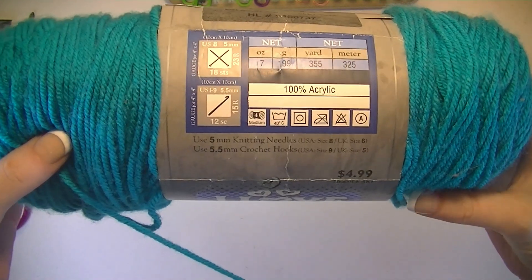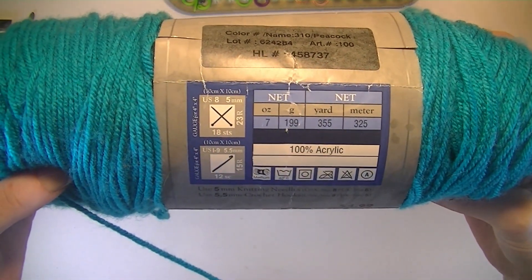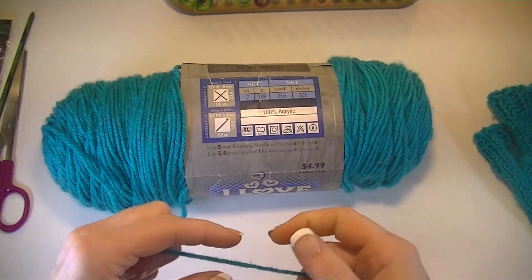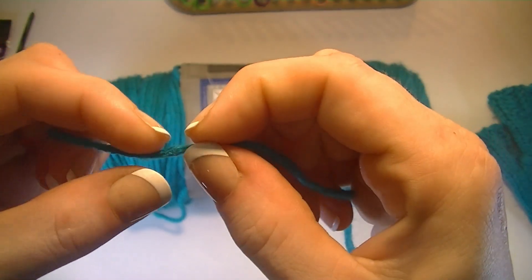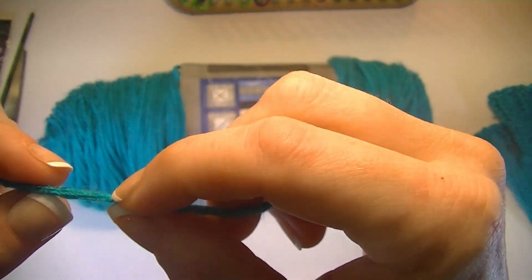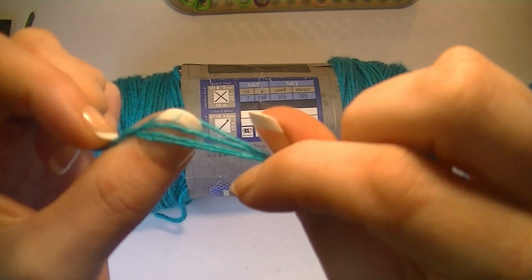Now this is a number four worsted weight yarn that is 100% acrylic. If you untwist it here, you can check and see how many little individual strands there are. There's four of them, so it's a four ply.